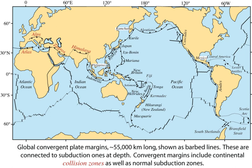Volcanoes that occur above subduction zones, such as Mount St. Helens, Mount Etna and Mount Fuji, lie at approximately 100 km from the trench in arcuate chains, hence the term volcanic arc. Two kinds of arcs are generally observed on Earth: island arcs that form on oceanic lithosphere, for example the Mariana and the Tonga Island arcs, and continental arcs such as the Cascade Volcanic Arc, that form along the coast of continents.